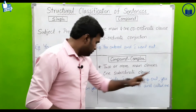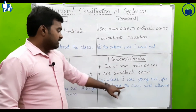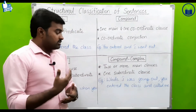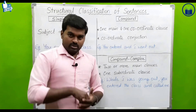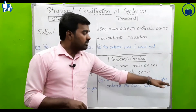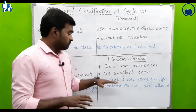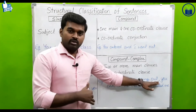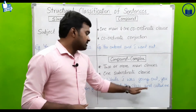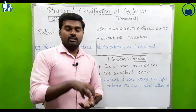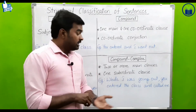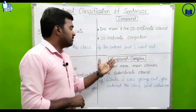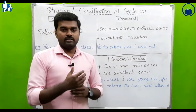For example: 'While I was going out, you entered the class and called me.' Here 'while I was going out' is the subordinate clause, and 'you entered the class and called me' contains two main clauses joined by 'and'. So there are two main clauses and one subordinate clause — this is a compound-complex sentence.